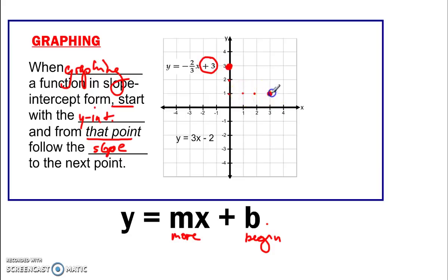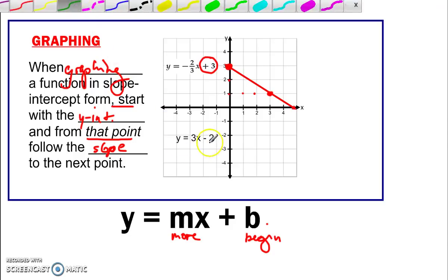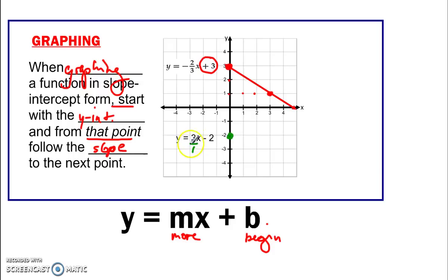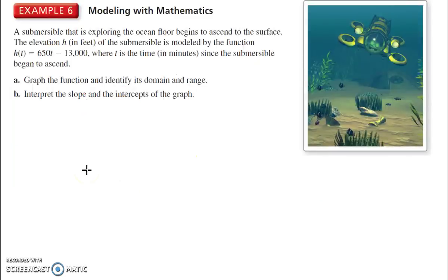And graph that line that goes through those points. Let's do this one down here. Start at negative 2. Begin here. Move this. Always make your slope a fraction. Then you know that you have to go over 1, up 3. 1, 2, 3 over 1. And then we graph a line that goes through those points. There you go. Graphing.